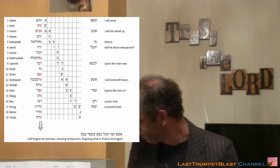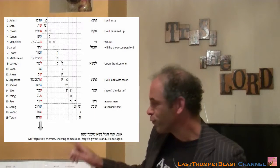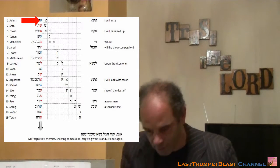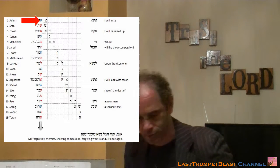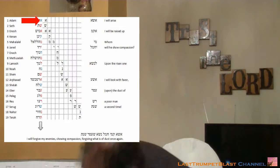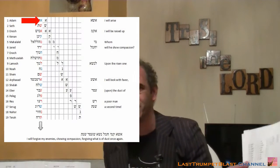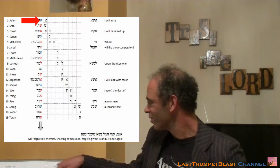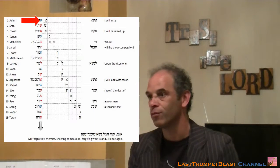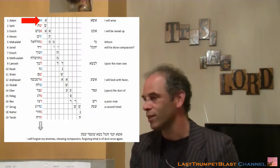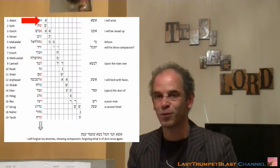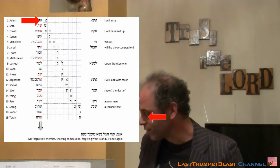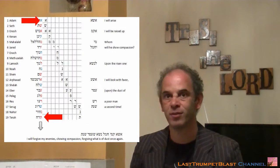Now, there's another interesting thing, because the first letter of this sentence — what is the first letter? It's the first letter of the alphabet, the first letter of the first man. The Aleph. And what is the last letter of this sentence? The Taf. And this is the first letter of the name Tera — Taf.